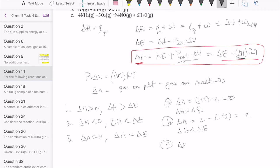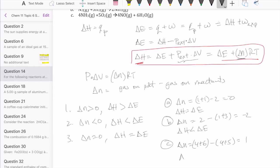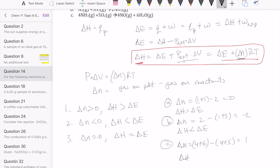The last scenario is delta N is four plus six minus four plus five. That gives us one positive number. So that means that the delta H must be greater than delta E in this case.